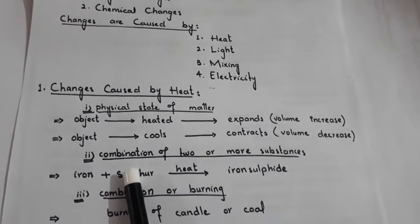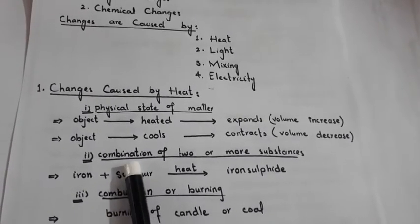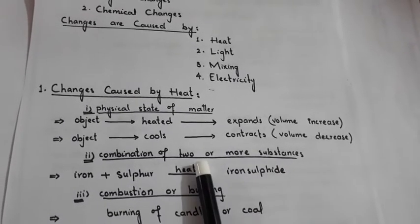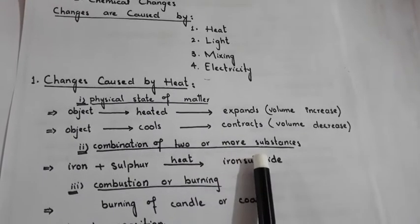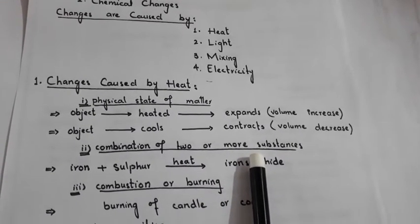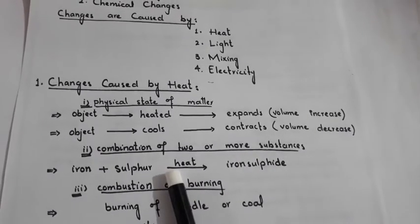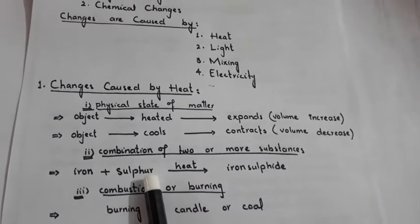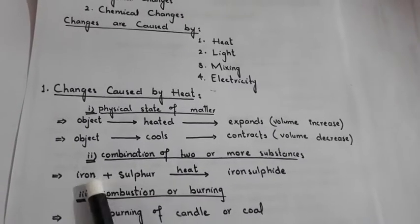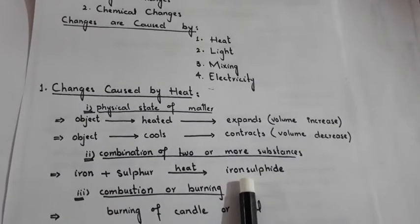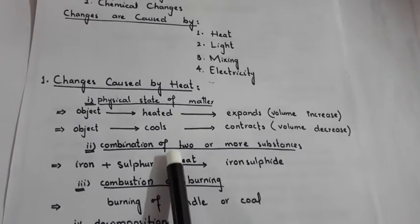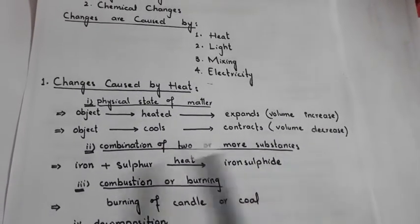The next change caused by heat is the combination of two or more substances. When we put two or more substances on heat, they combine together. For example, when iron and sulfur are put together on heat, they are converted into a new substance — iron sulfide. This is the second change due to heat: combination of two or more substances.